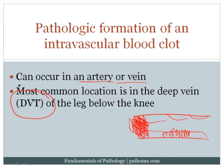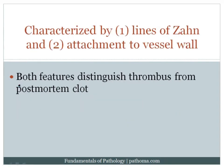We're all familiar with DVTs. It's important to note that thrombus is characterized by lines of Zahn and attachment to the blood vessel wall. Why is this important? Let's say I'm looking at a patient at autopsy and I see that in their coronary artery there is a blood clot, and now I'm trying to decide: did that blood clot potentially kill the patient? So I could ask the question — did this blood clot occur before the patient died, or did it occur after?